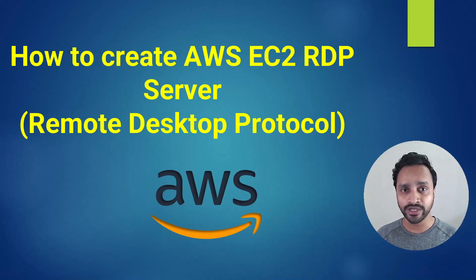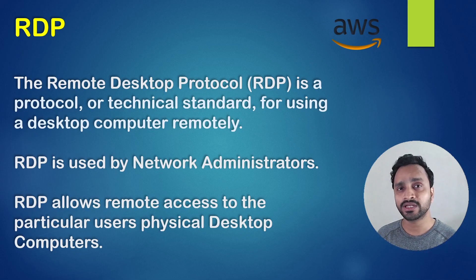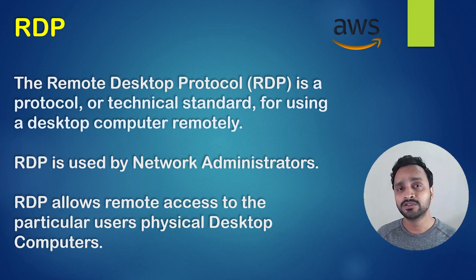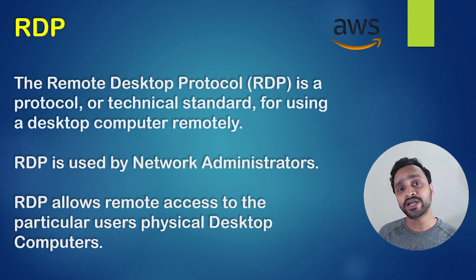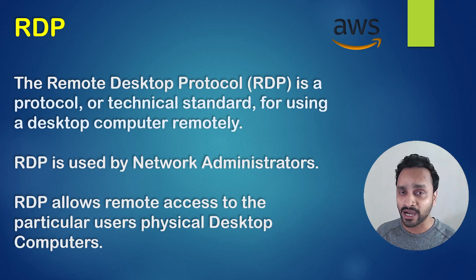Hi everyone, welcome back to another video. Today we are going to see how to create an Amazon RDP server — that is Remote Desktop Protocol. So what is Remote Desktop Protocol? It is a protocol or technical standard for using a desktop computer remotely, meaning you can remotely use another desktop or virtual machine. RDP is basically used by network administrators and allows remote access to a physical or desktop computer available at another location. Let's jump directly to the AWS cloud and learn more about RDP.